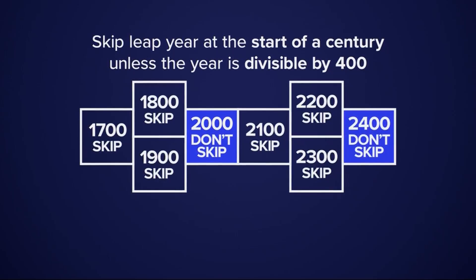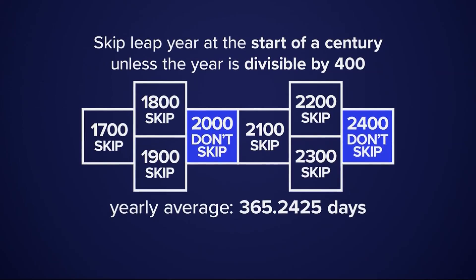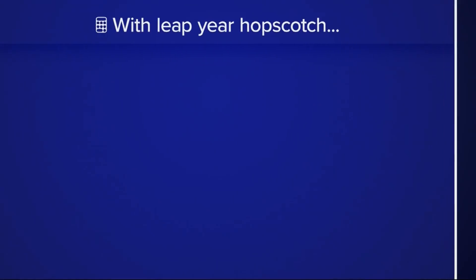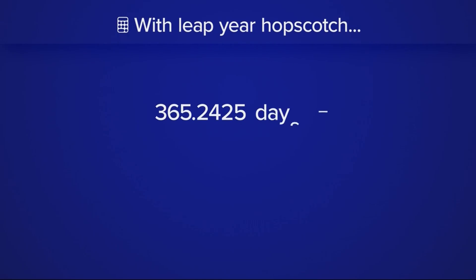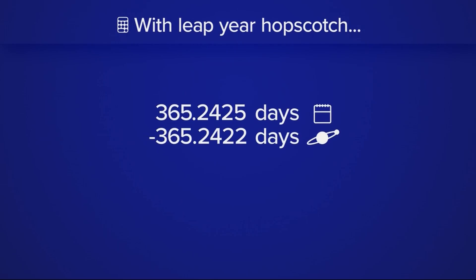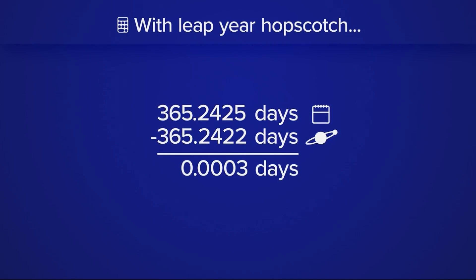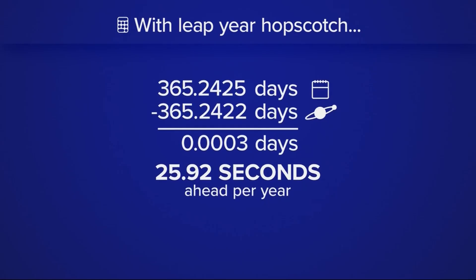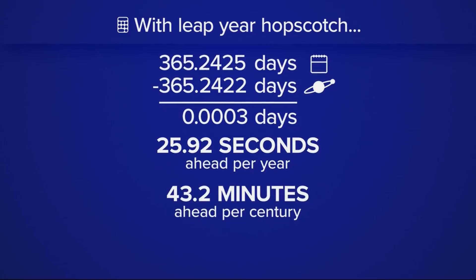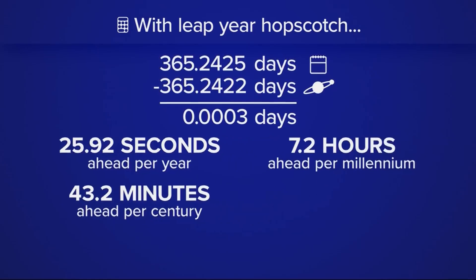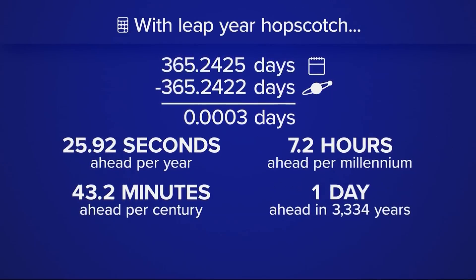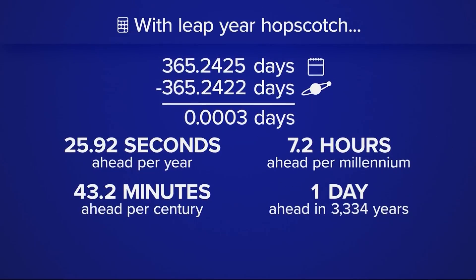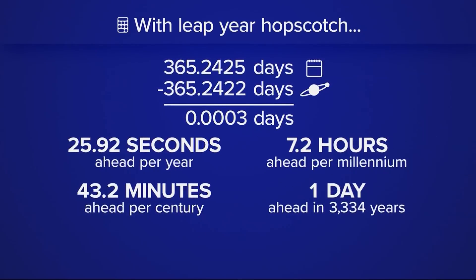This is easy to understand, right? With this added solution, the current average is 365.2425 days, which is a lot closer to the solar year. Unfortunately, we're still off by decimals — about 26 seconds ahead each year. At this rate, it would take over 3,000 years to be off by a day, which some would argue is close enough.